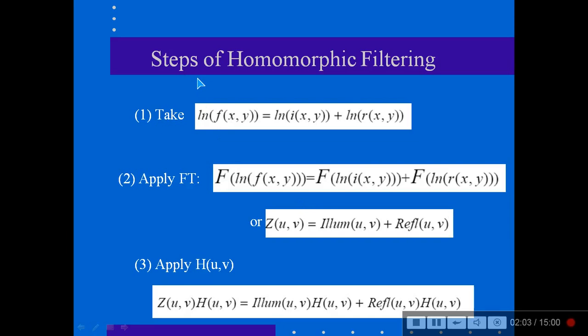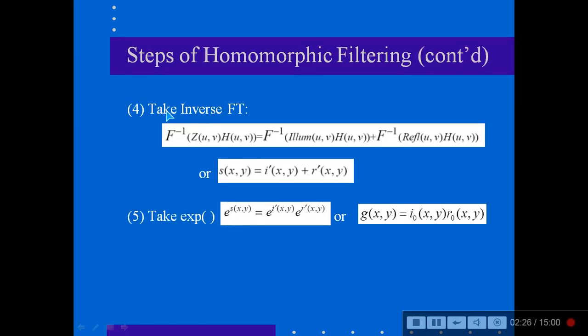And what will be the steps of homomorphic filtering? That is, we are taking the log, then applying Fourier transform. This capital F means we are taking Fourier transform. And then applying particular homomorphic filterization on the image in Fourier domain. Then once the homomorphic filtering is done,